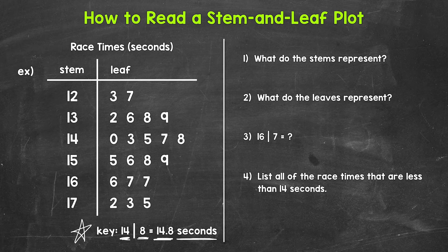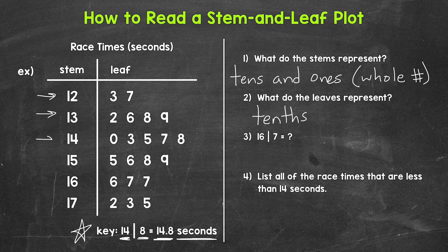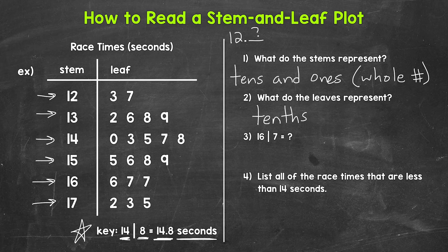For numbers one and two, the stems represent the tens digit and the ones digit — or we can think of this as the whole number. The leaves represent the tenths place. For the stems, we have 12, 13, 14, 15, 16, and 17. Think of the stems like this: stem of 12, then decimal, and the leaves go in the tenths place. Then stem of 13, decimal, leaves. Stem of 14, decimal, leaves.